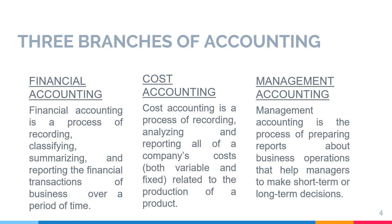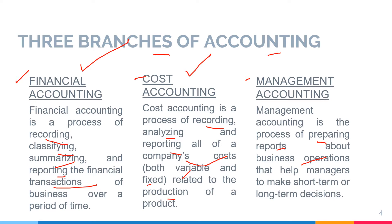Before starting with cost accounting, let's understand the three branches of accounting: financial, cost, and management. Financial accounting is the process of recording, classifying, summarizing and reporting financial transactions so that at the end of the year, the business's financial position and profitability is known to internal and external users. Cost accounting is the process of recording, analyzing and reporting all of the company's costs — variable and fixed. Management accounting is the process of preparing reports about business operations using financial accounting and cost accounting data, helping managers make short-term and long-term decisions.